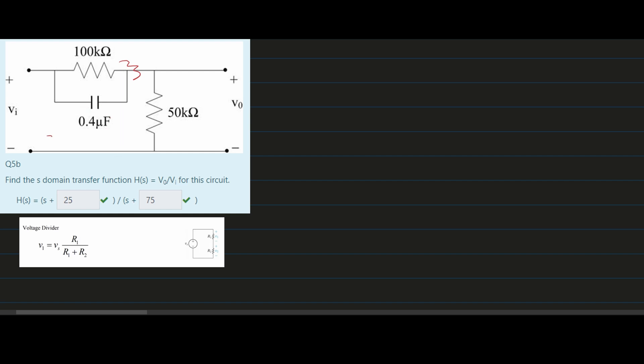In the S domain, we have Z of C equal to 1 over SC. For simplicity, we're not going to plug in our numbers yet. We'll leave them as values, and we'll say this is R, and the total of this is R total.